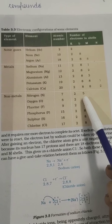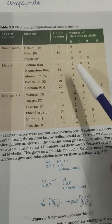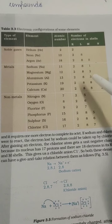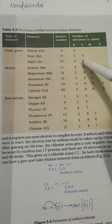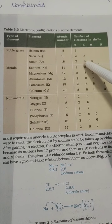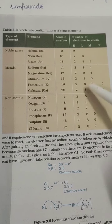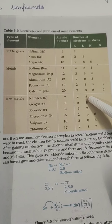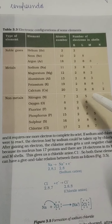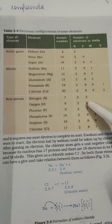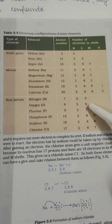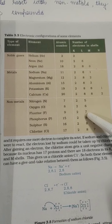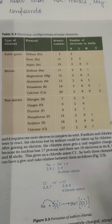Non-metals want to attain the noble structure of neon because neon has 2 and 8, so they want to have 8 electrons in the L shell. Nitrogen is having 5 electrons, so it needs 3 electrons - that is why it will like to gain 3 electrons. Oxygen having 6 wants to have 8, so it will gain 2 electrons. In the case of fluorine and chlorine, they will have 1 electron vacant, so they will gain 1 electron.